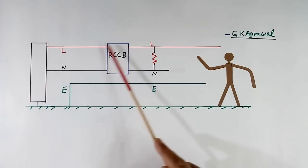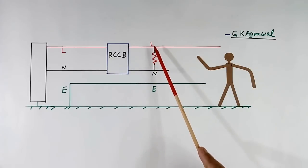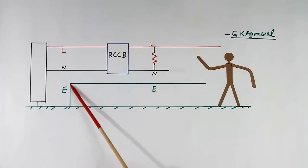This is RCCB breaker. Here I have connected load between line and neutral. This is house earth.